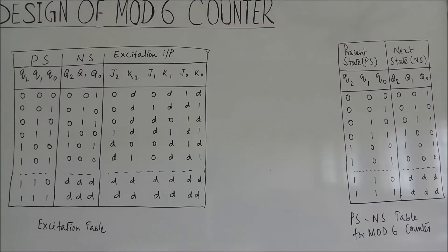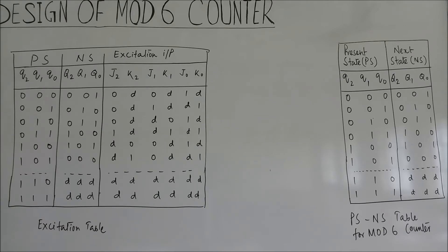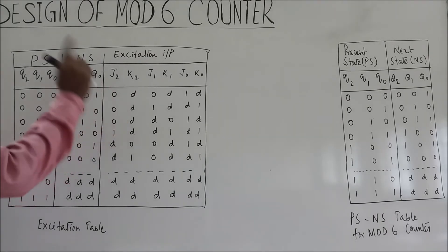Now we draw the excitation table. Here present state is 0 and next state is 0. This occurs in two cases: when there is no change, meaning J and K are both 0, and the reset condition where J=0 and K=1. In these two combinations, we make J=0 and K=don't care.